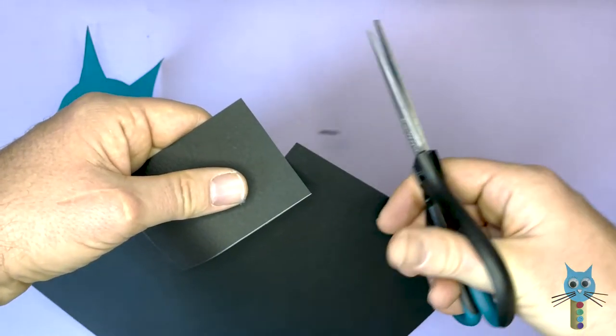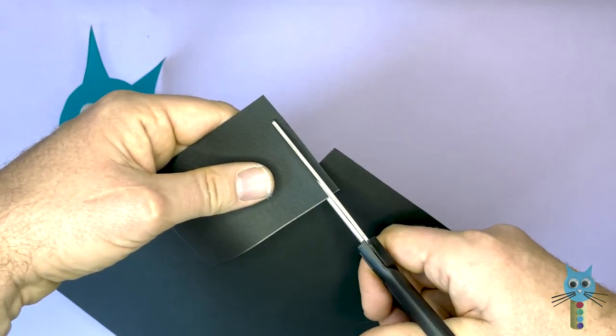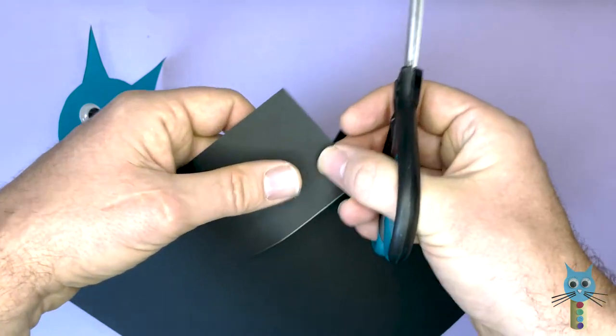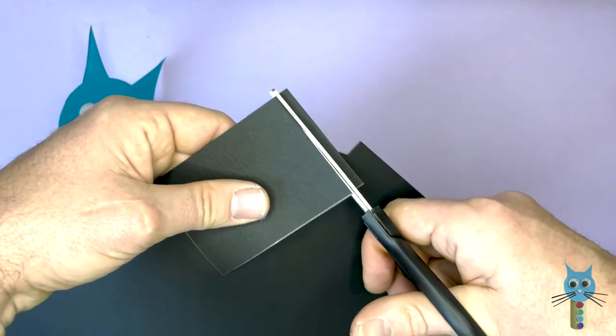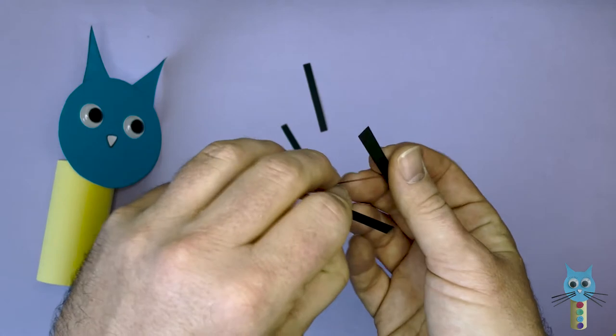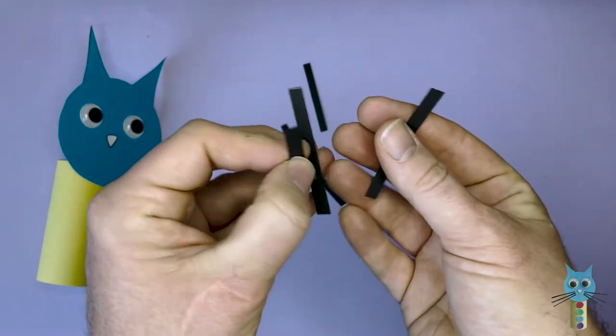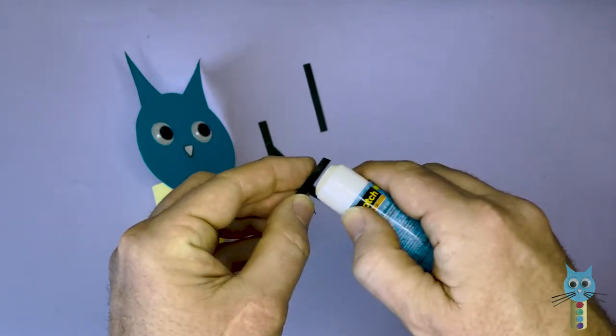And then just cut out some strips for the whiskers. You can make them very thin or very thick. I like them to be quite thick. And I've cut out six strips of black paper here.